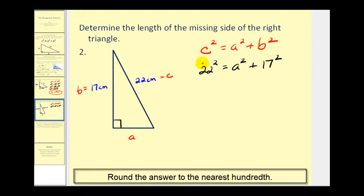22 squared would be 484, must equal A squared, plus 17 squared equals 289.